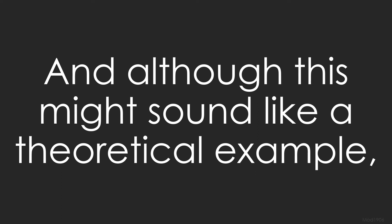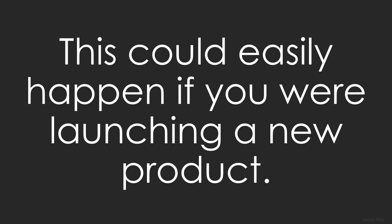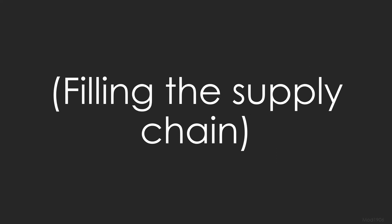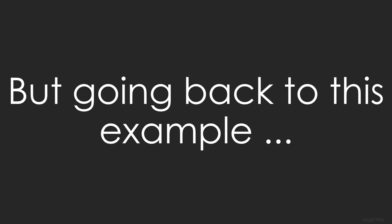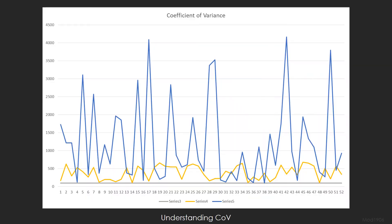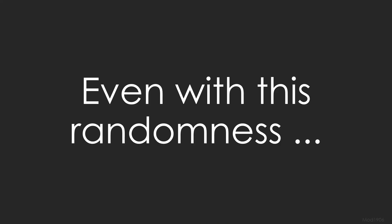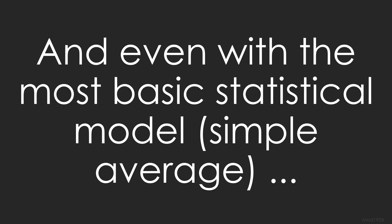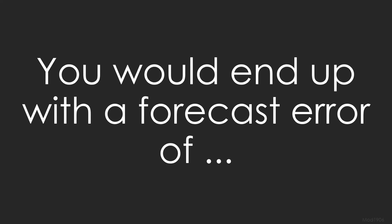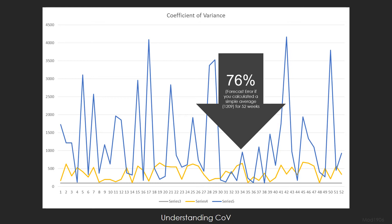Although this might sound like a theoretical example, this could easily happen if you were launching a new product — it's called filling the supply chain. But going back to this example, even with the randomness and even with the most basic statistical model — a simple average — you would end up with a forecast error of 76%.